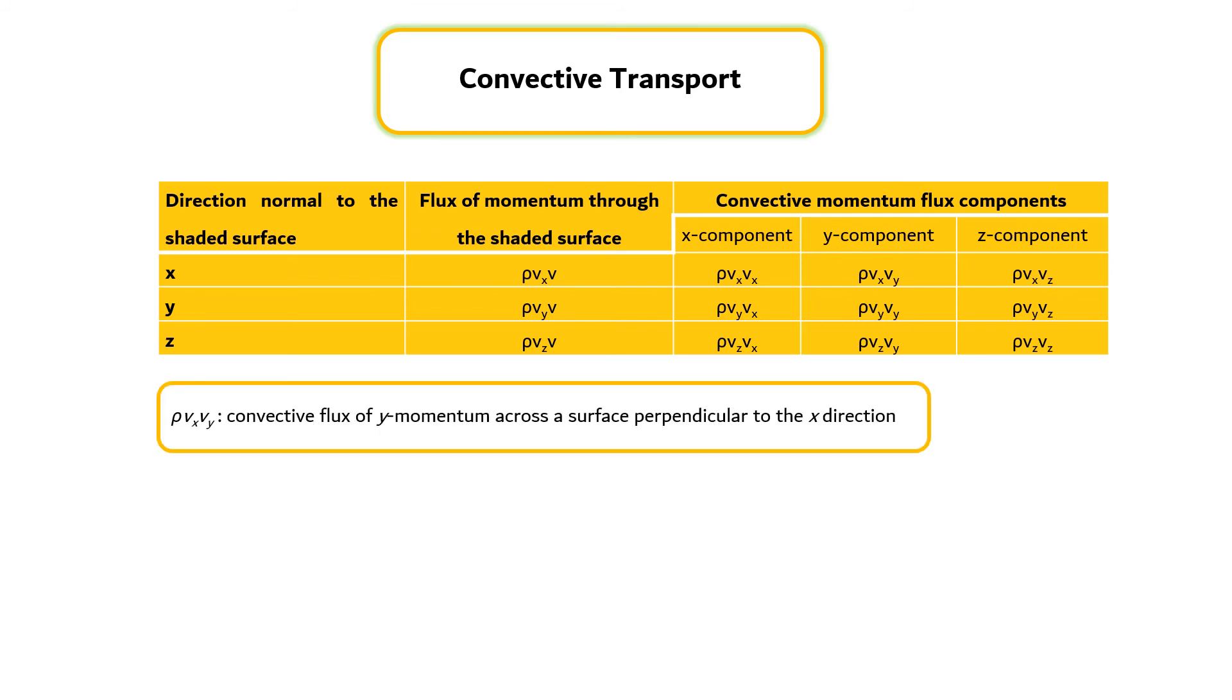The quantity ρv_x v_y is the convective flux of y-momentum across a surface perpendicular to the x-direction. This should be compared with the quantity π_xy, which is the molecular flux of y-momentum across a surface perpendicular to the x-direction.